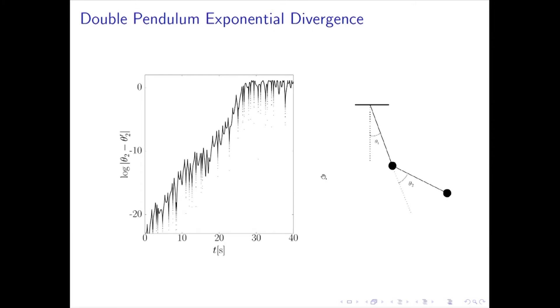So that was the amplification of a width of an atom in a matter of a few tens of seconds. More graphically, this is showing the double pendulum. This angle here is theta 2. This shows the difference between theta 2 for two different simulations of the double pendulum. And you can see that on a log plot, the log of the difference, this is a natural log, grows exponentially until it can't grow any further. So that's the exponential sensitivity to initial conditions.